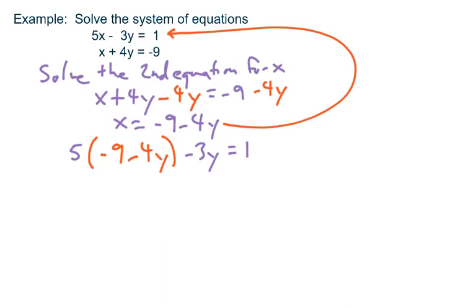Distribute it across, and you would get negative 45, negative 20y, minus 20y minus 3y equals 1.